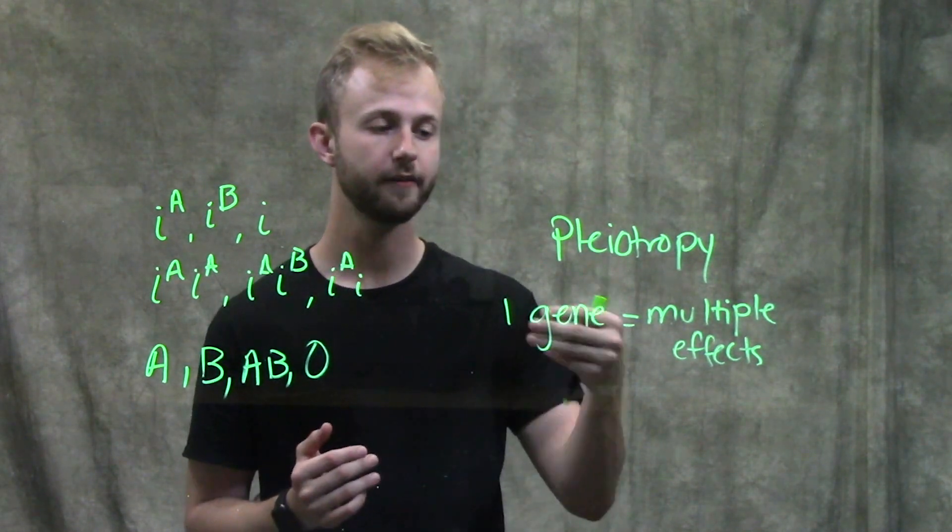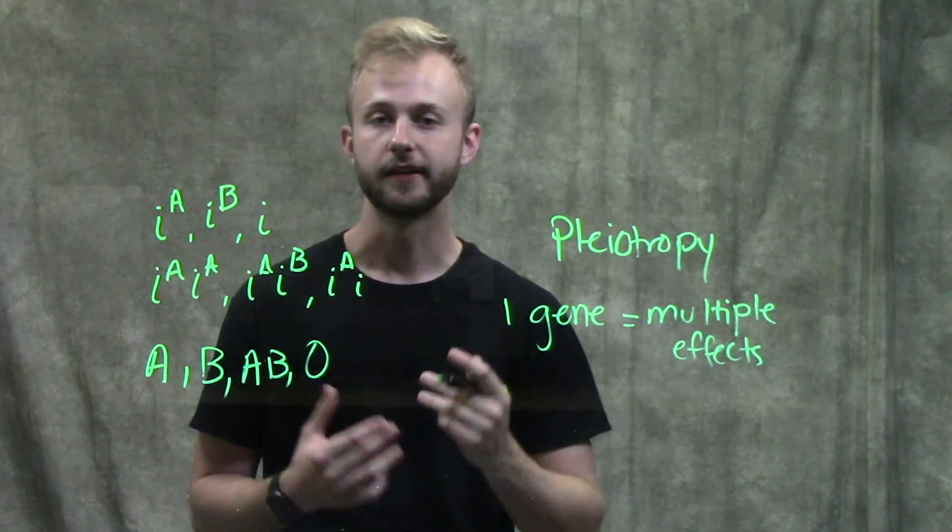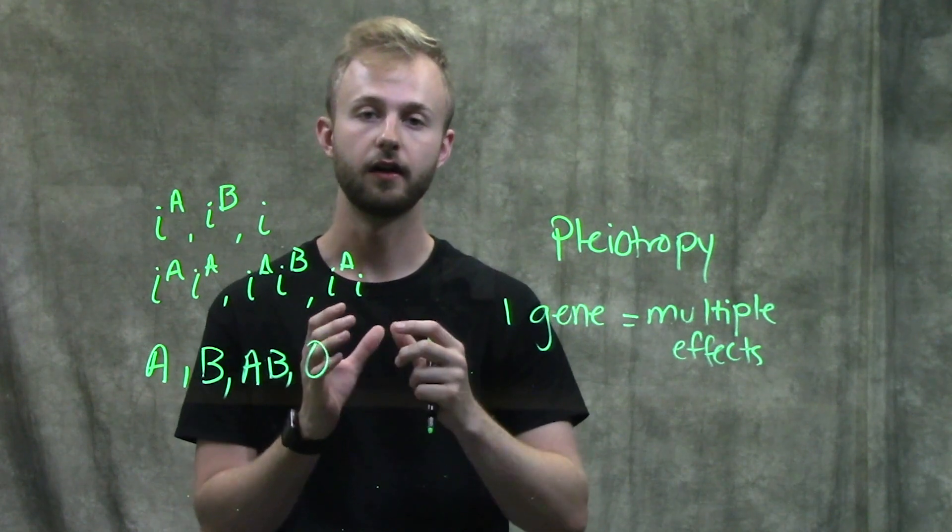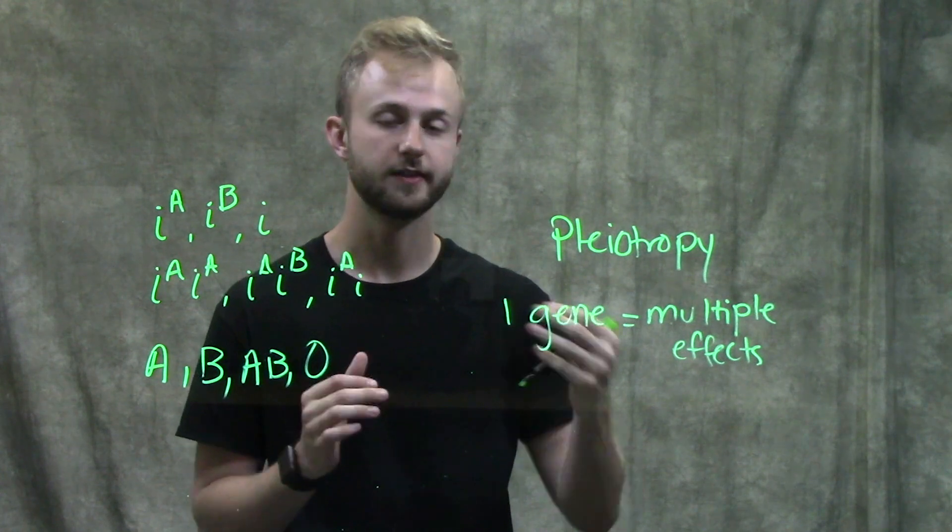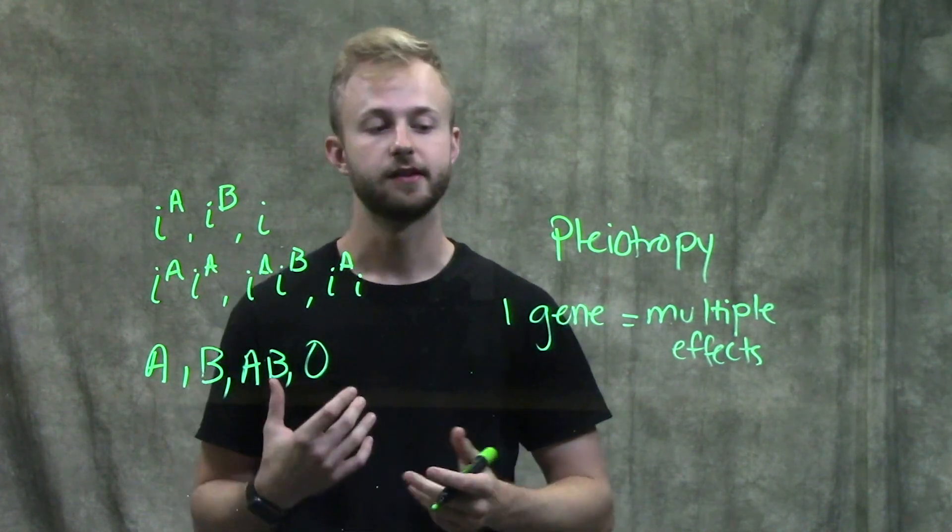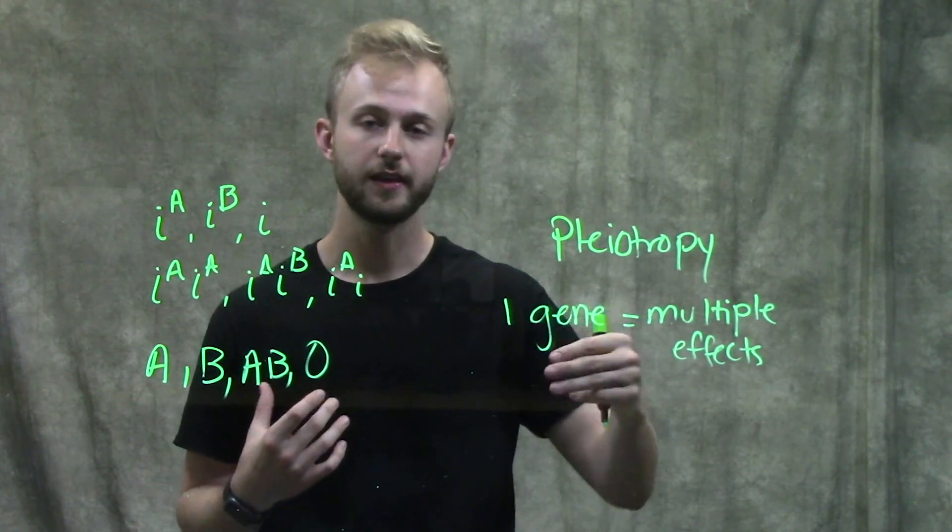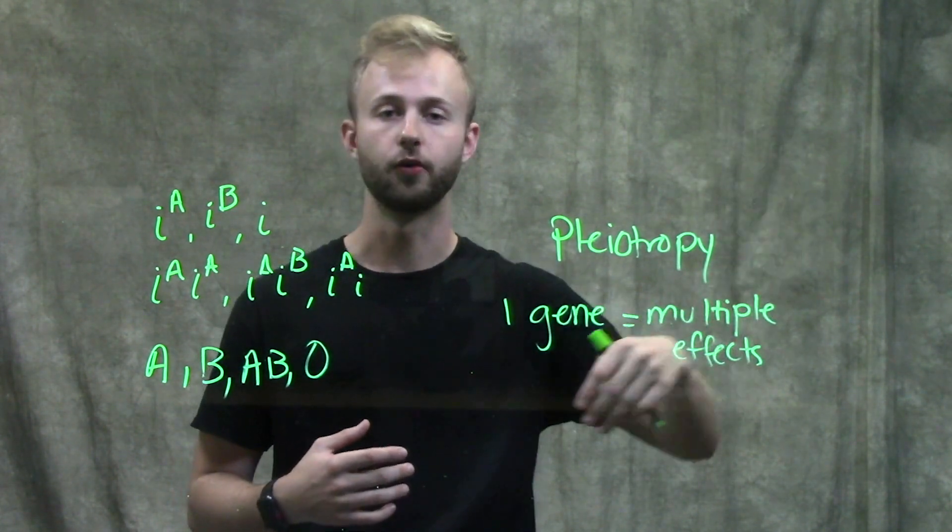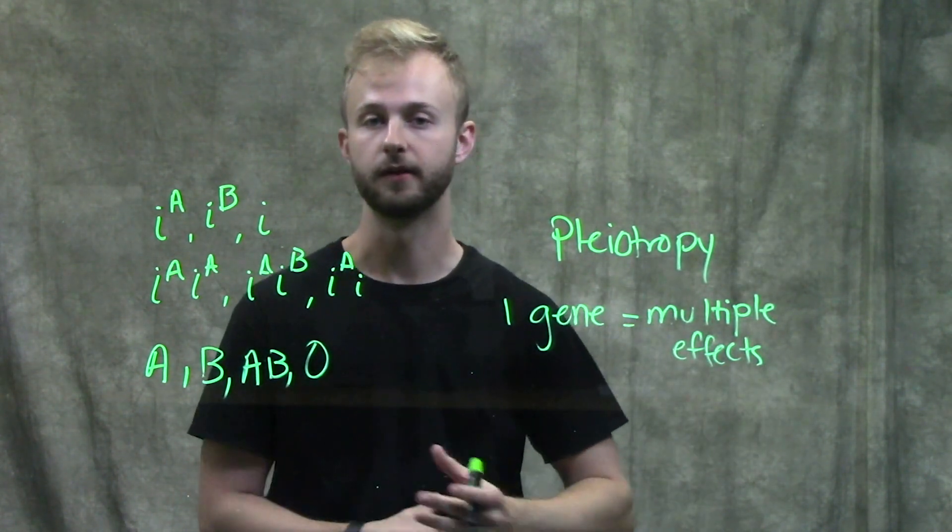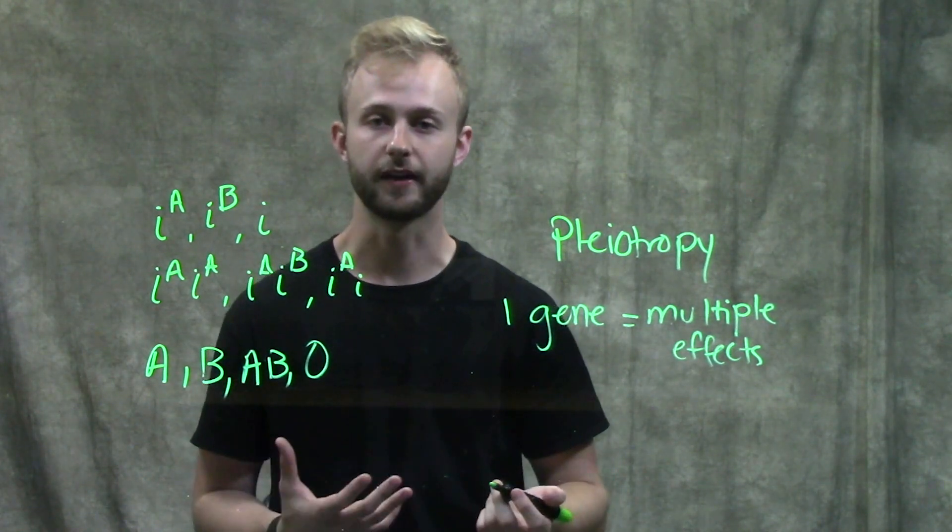And so when we have pleiotropic genes, it's kind of hard to figure out what phenotypic traits a gene is actually influencing. Because one gene, we can think it does one thing and then not know that it also influences another phenotypic effect.